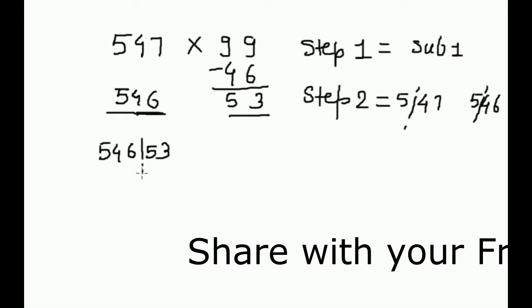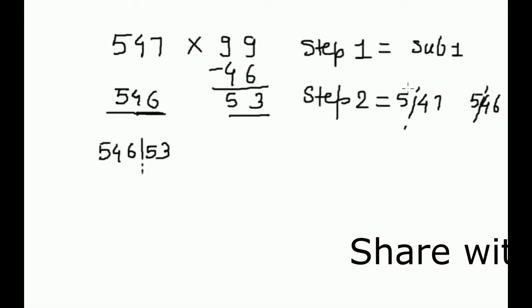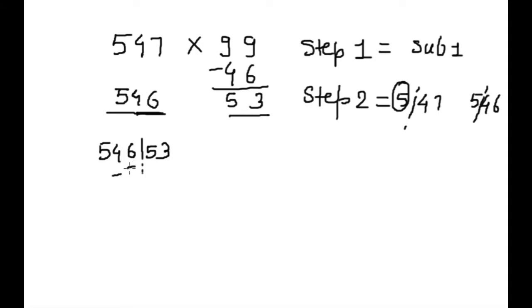And we will divide this again from here. And this 5 and this 5 we will subtract from here. 53, this is 1, 6 minus 5 is 1, this is 45. So our answer is 54153. Let's see next example.